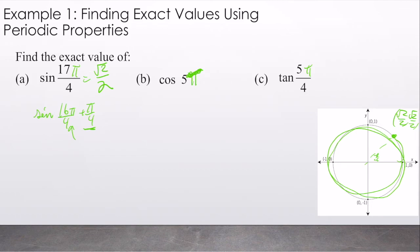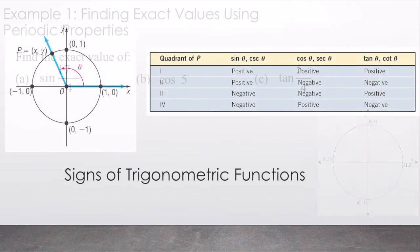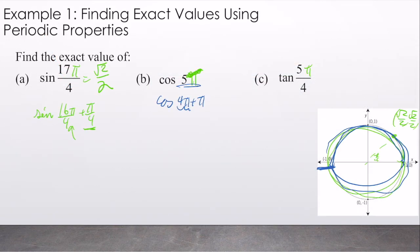Let's change colors for clarity. If I have cosine of 5π, that's the same as cosine of 4π plus π, because it's periodic every 2π. So we're going to go around 1, 2, 3, 4, 5, that puts me right here. Cosine is x. Cosine is x, so that gives me a value of negative 1.